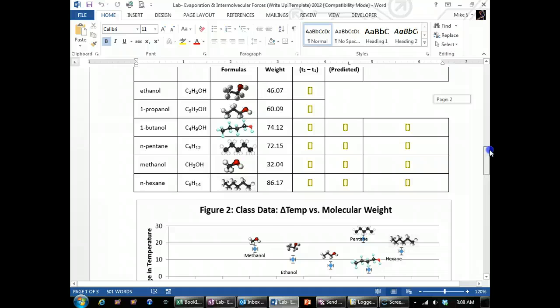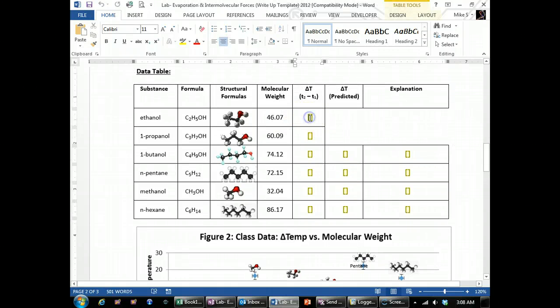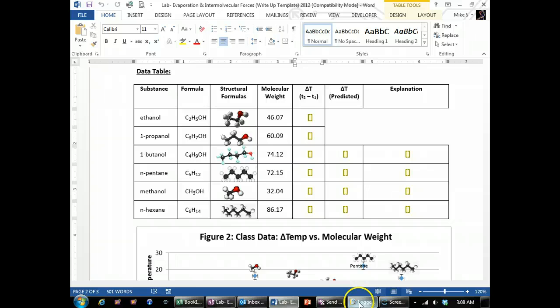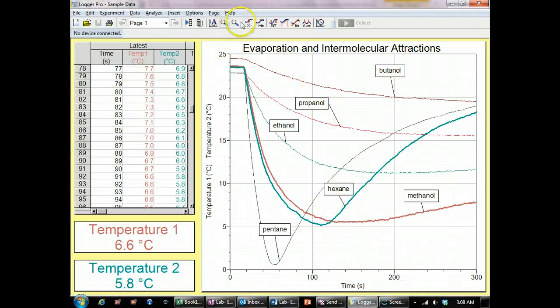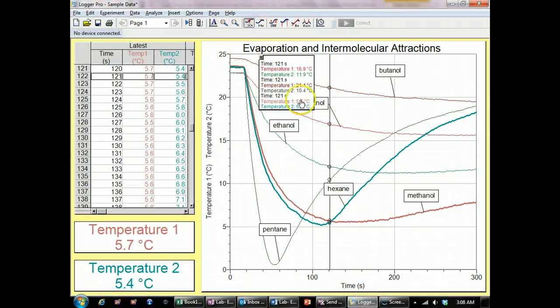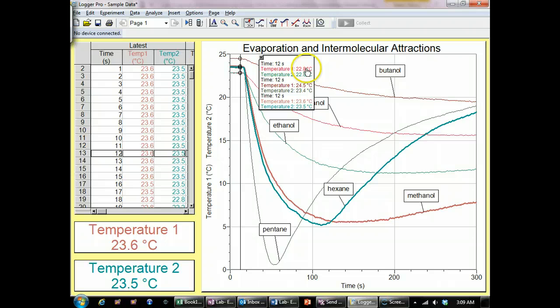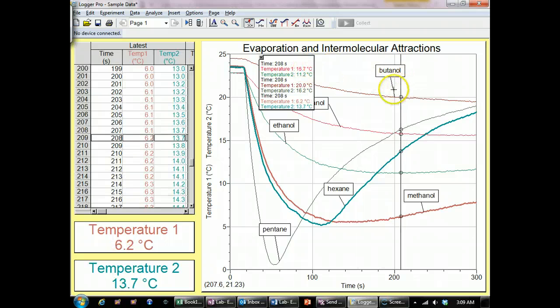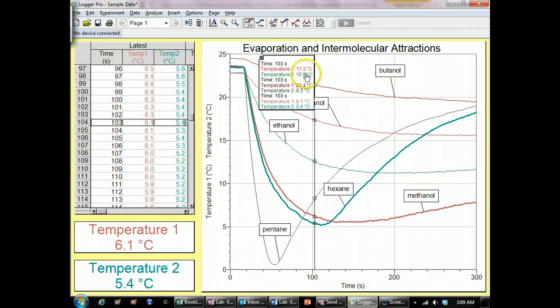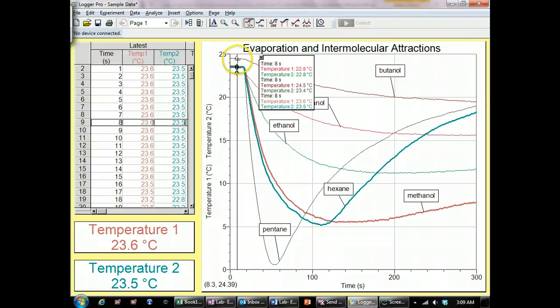And then you enter your data in here. Your delta T is going to be based off of your data from the lab. When you look at your starting temperature, this is your T1. And so you can read this off the graph where you've got 22.8 for temperature one. And you can read all these values off the graph right here.